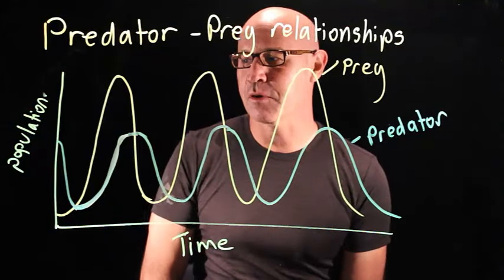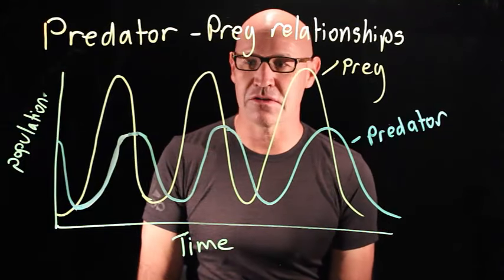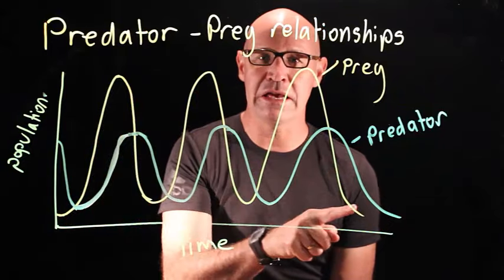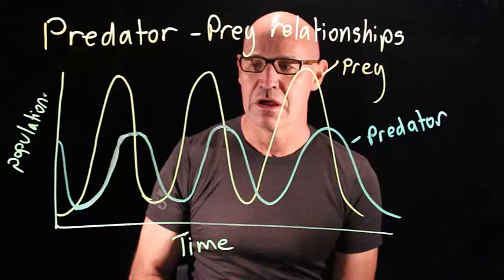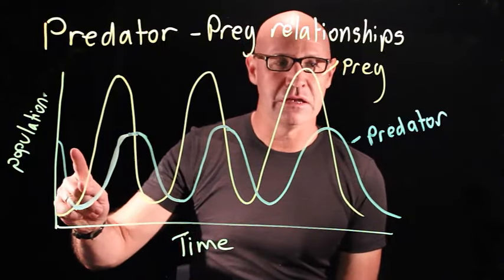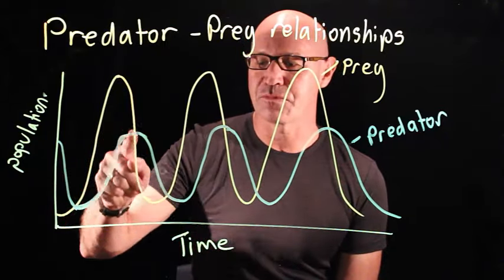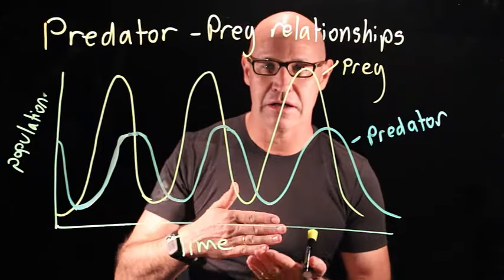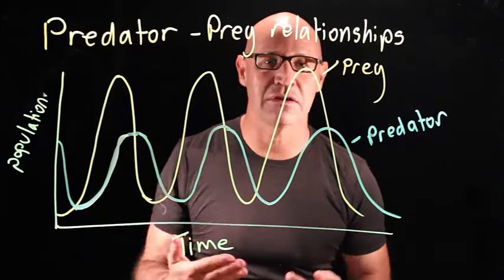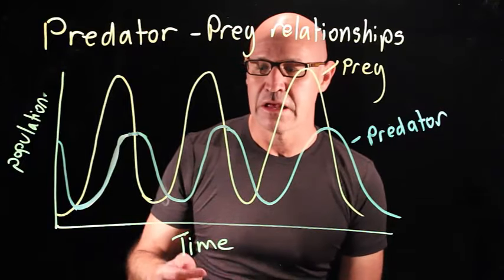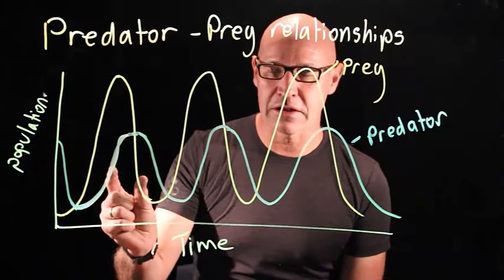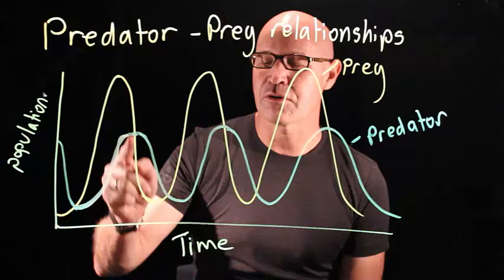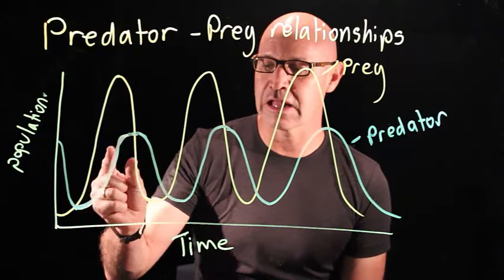There are probably three things I want you to be able to see. First of all, they both have the same pattern of peaks and troughs. I also want you to see that there's more prey than there are predators, and that's of course because of the inefficiency of energy transfer through the food chain. The other thing is that the predator graph is delayed behind the prey graph — it lags behind.